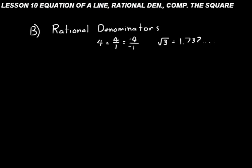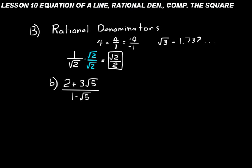Rationalizing the denominator means eliminating irrational numbers from the denominator. When we have 1 over the square root of 2, that's not the standard accepted form. We multiply above and below by the square root of 2 to get rid of the radical in the denominator, giving us square root of 2 over 2. Let's do some practice with rationalizing the denominator.